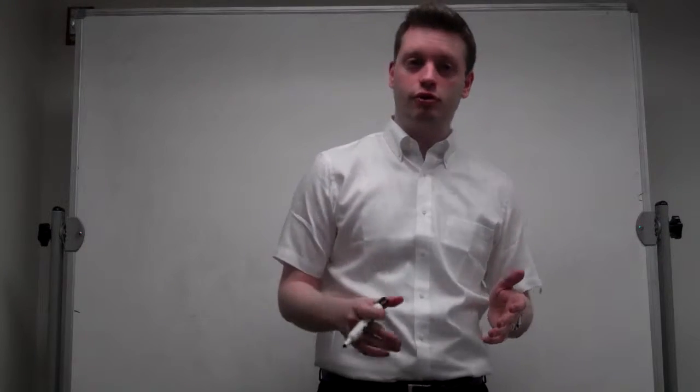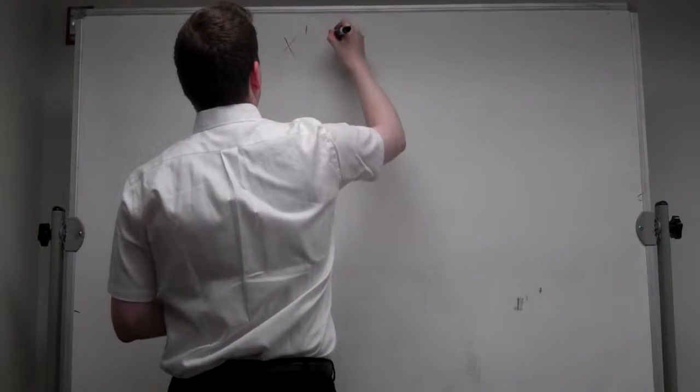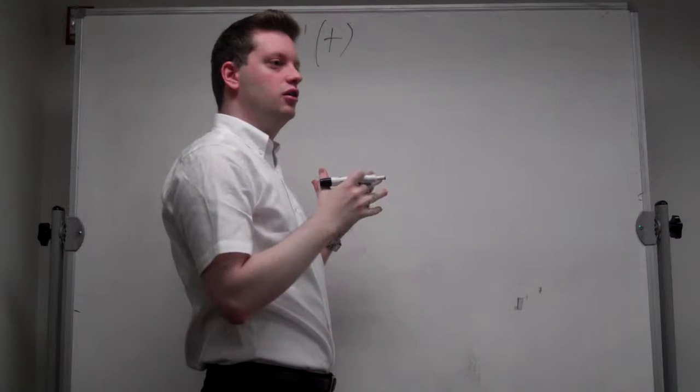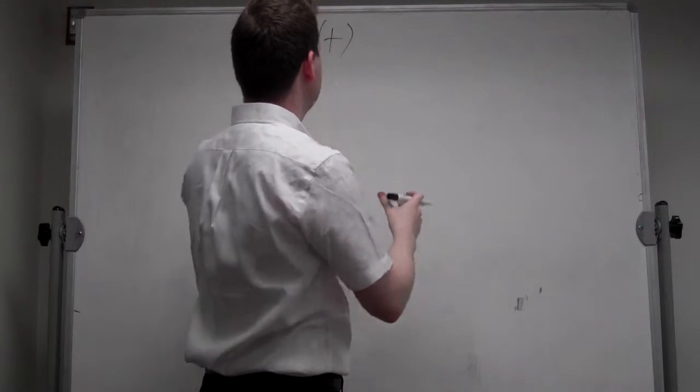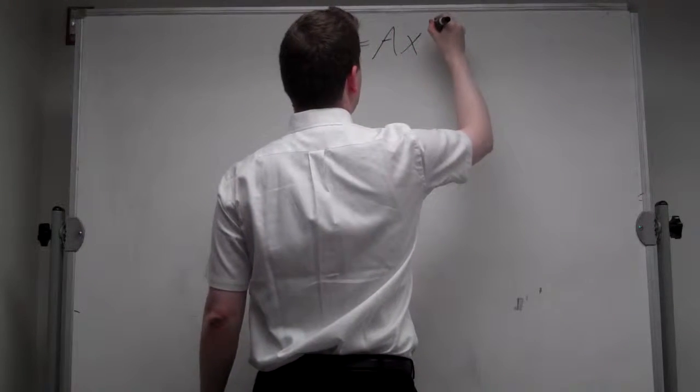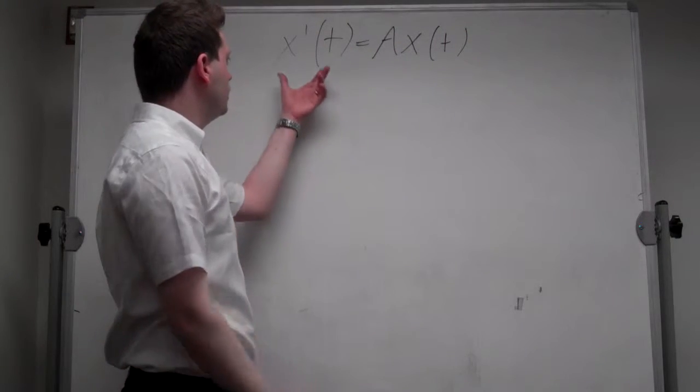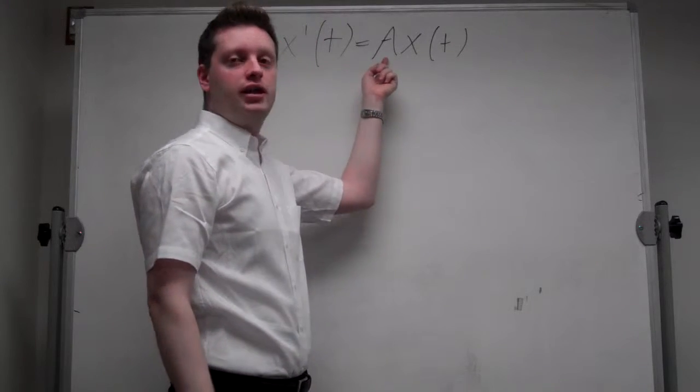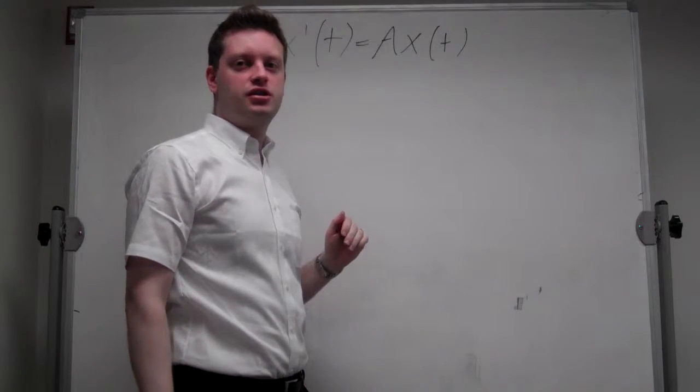Okay, let's start with the general form. The general form of a system of homogeneous first-order linear differential equations is given by x prime t is equal to some matrix A times x of t. x prime t and x t are vectors and A is a matrix.